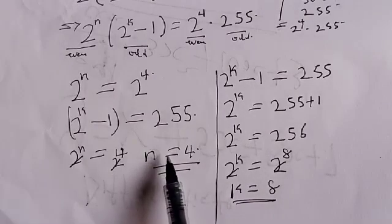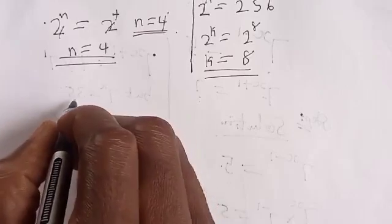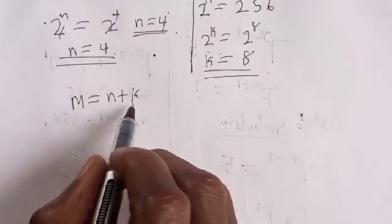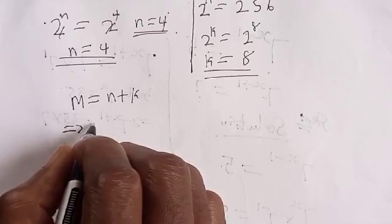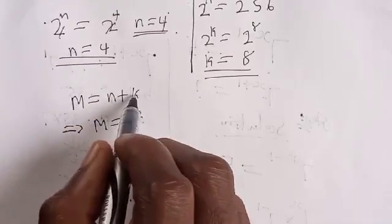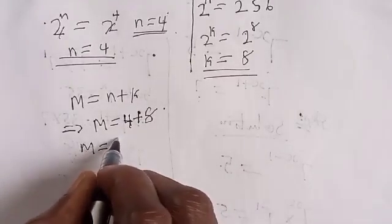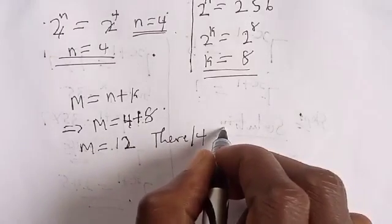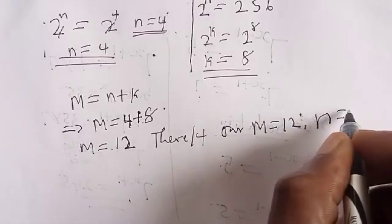We've now found n equals 4 and k equals 8. Recall that m is equal to n plus k. Therefore m is equal to 4 plus 8, so m is equal to 12. Therefore our final answer is m equal to 12 and n equal to 4.